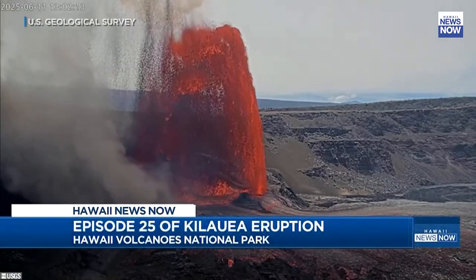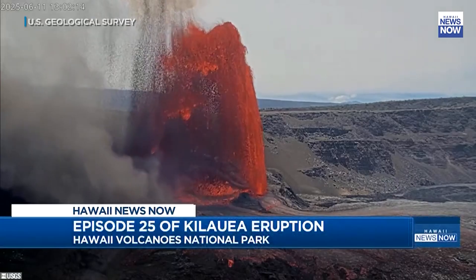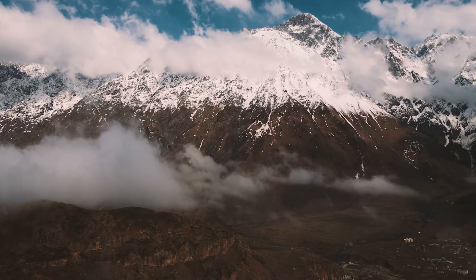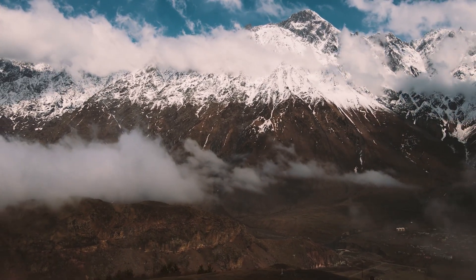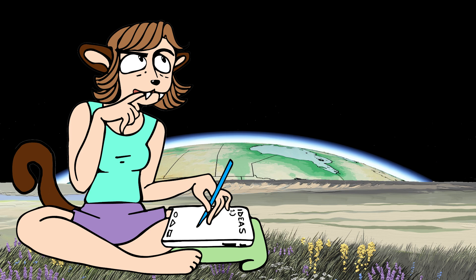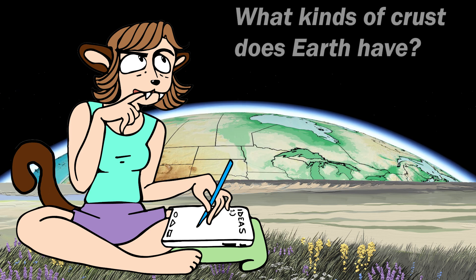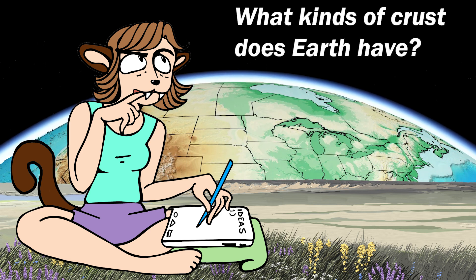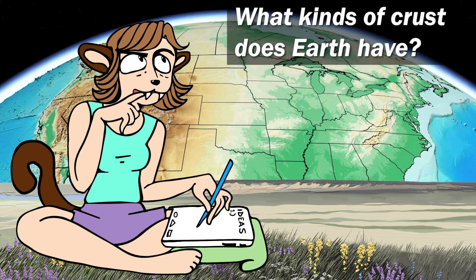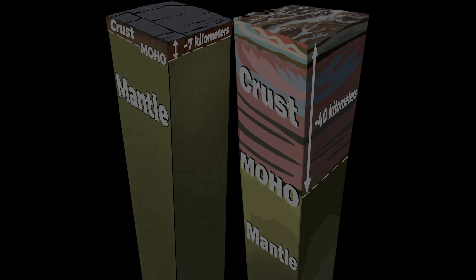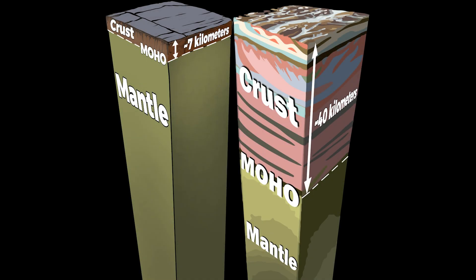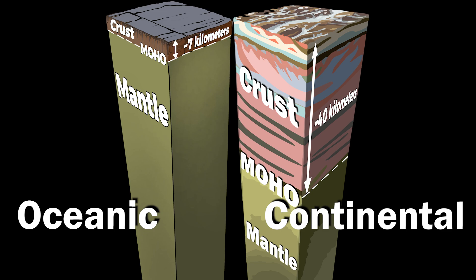Before we look at U.S. continental crust, let's review what kinds of crust Earth has. Earth's outermost layer, the crust, comes in two types: oceanic and continental.